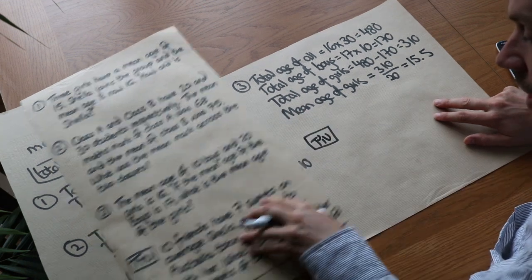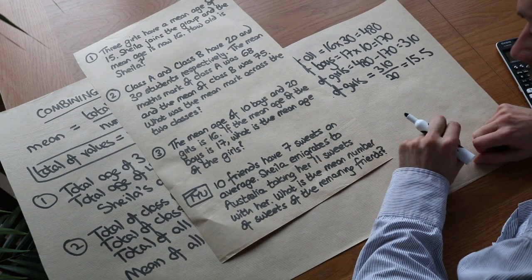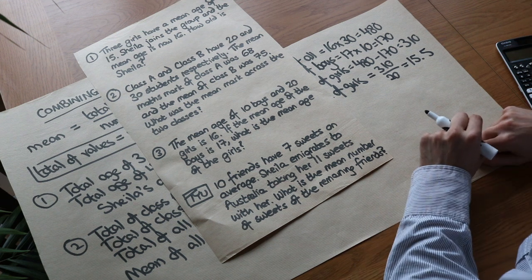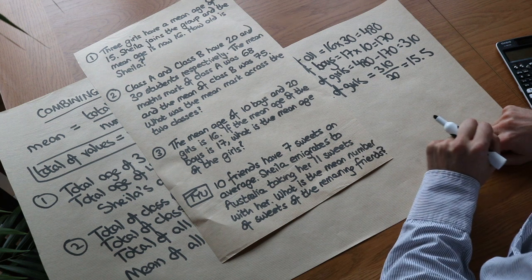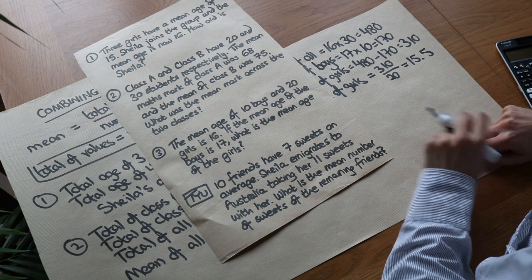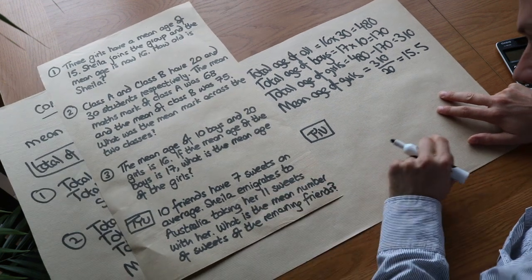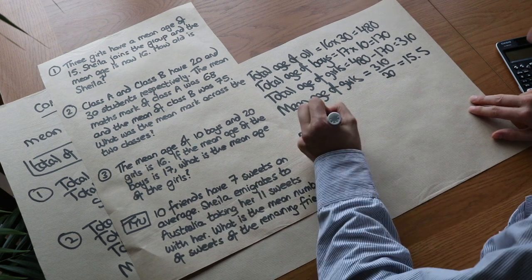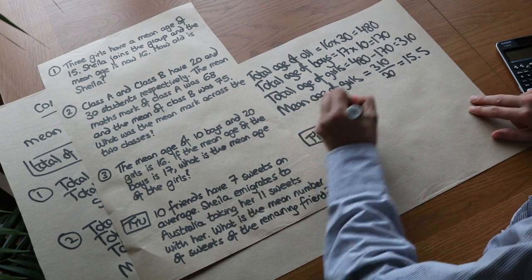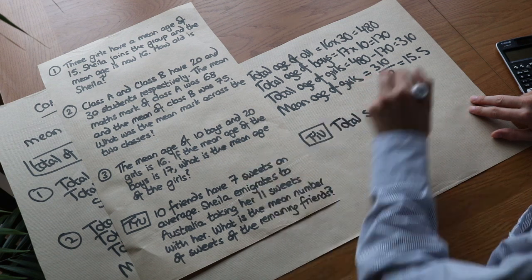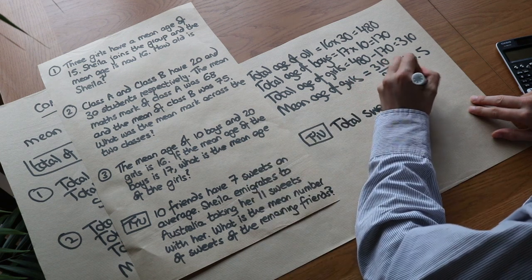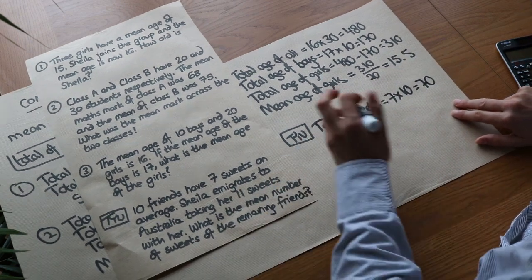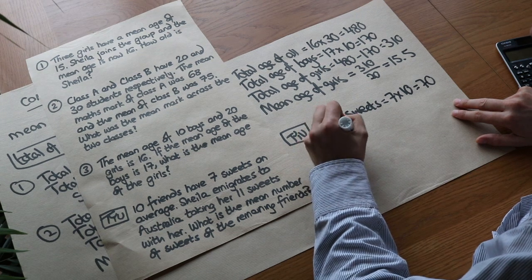Final question — test your understanding: 10 friends have 7 sweets on average. Sheila emigrates to Australia taking her 11 sweets with her. What is the mean number of sweets of the remaining friends? The total sweets of everyone is the mean (7) times the number of people (10), which equals 70.